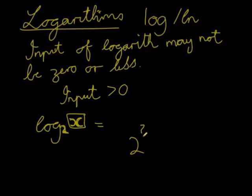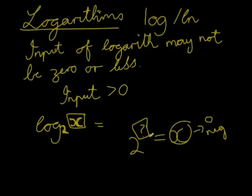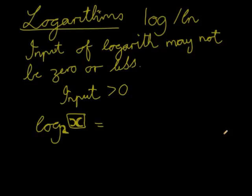2 to the power of something gives me x, and I'm saying that x is negative or zero. Is it possible? Is there any exponent that I can give for 2 to give me a zero answer or a negative answer? No, it's impossible. There's no such thing. In other words, I may not have an input that is less than zero or even equal to zero.